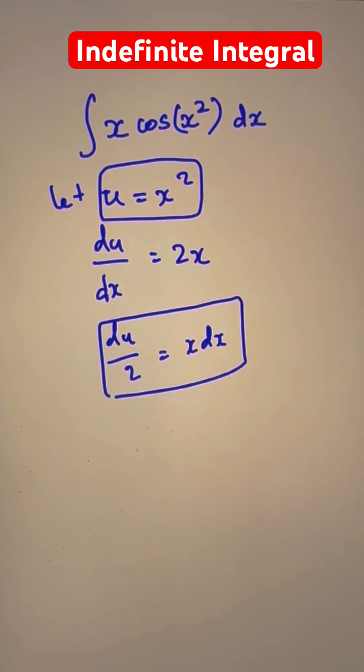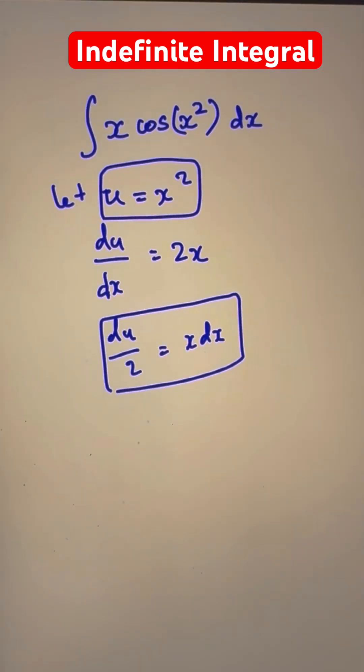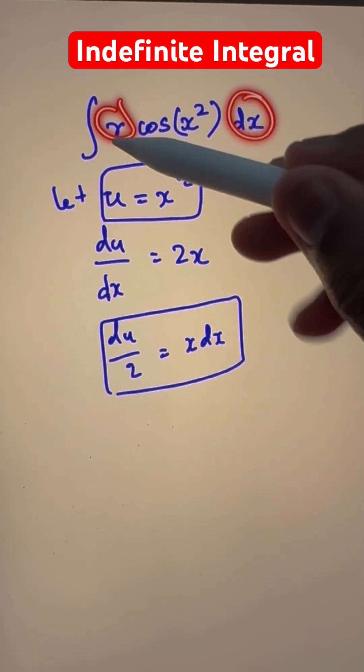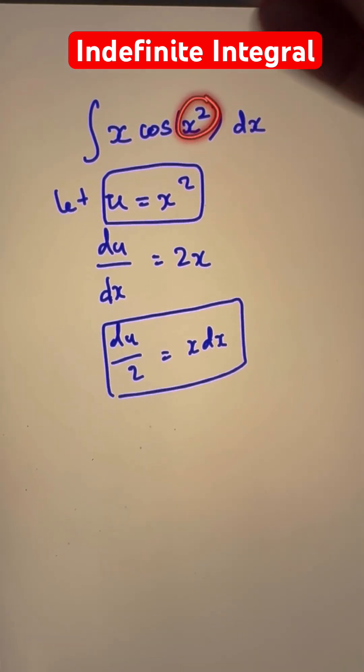So we get du by 2 is equal to x dx. So we have this here, u is equal to x squared, substitute both of these in. By the way, this x dx is this whole thing here and this u will be substituted there.